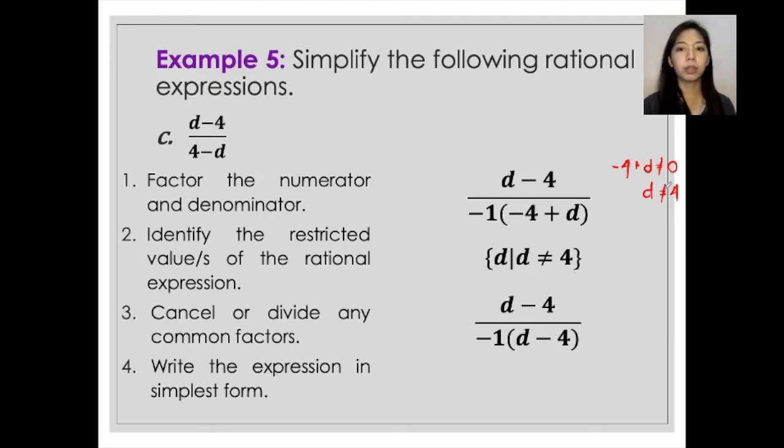Notice that you can cancel the d minus 4. So upon canceling, we now have 1 in the numerator and negative 1 in the denominator. The simplest form of that would simply be negative 1.